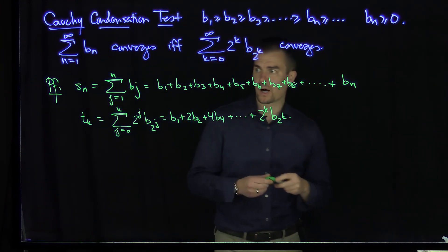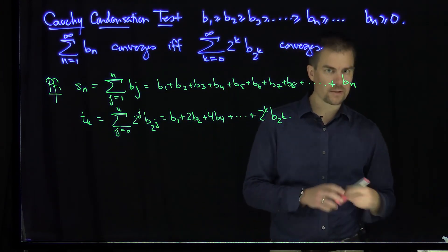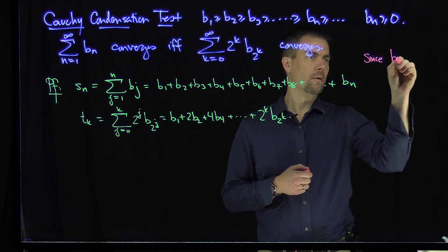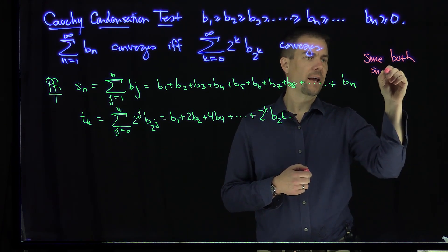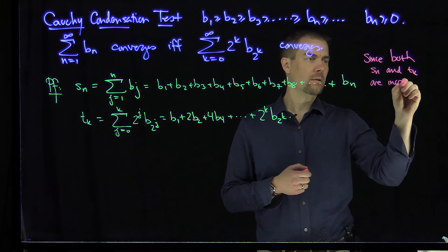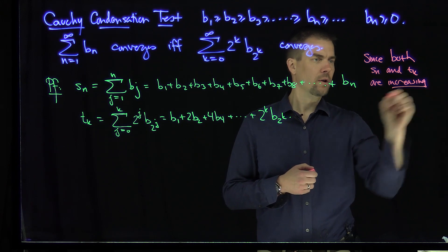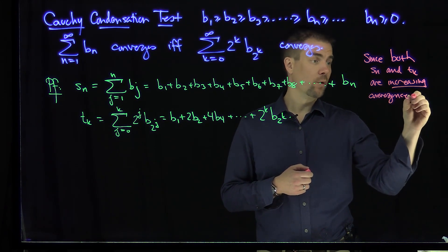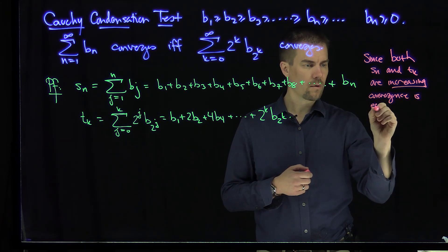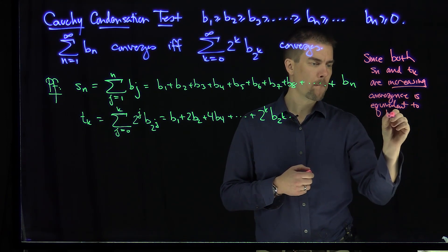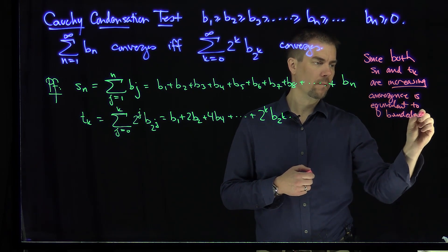And so now since both of these partial sums are increasing, since both Sn and Tk are increasing, convergence of the series is equivalent to boundedness.